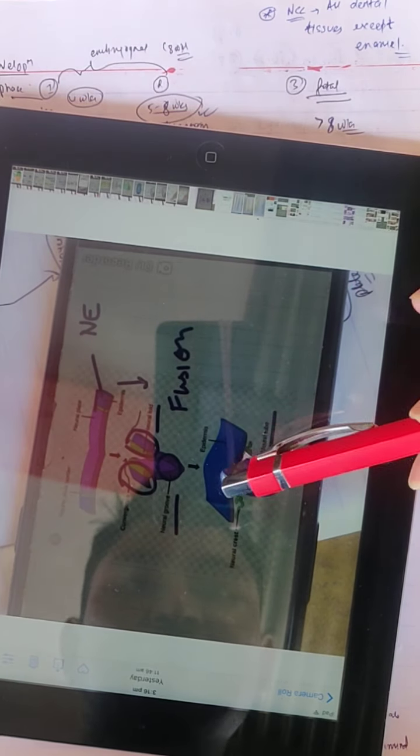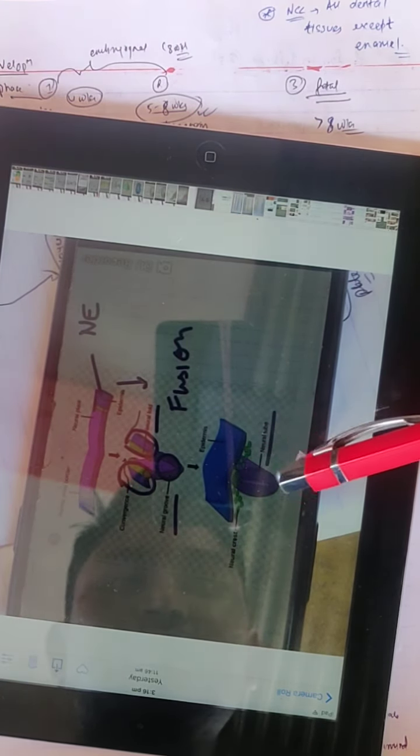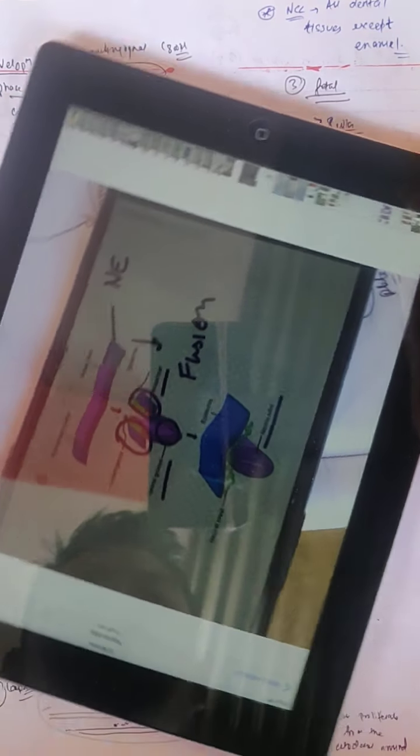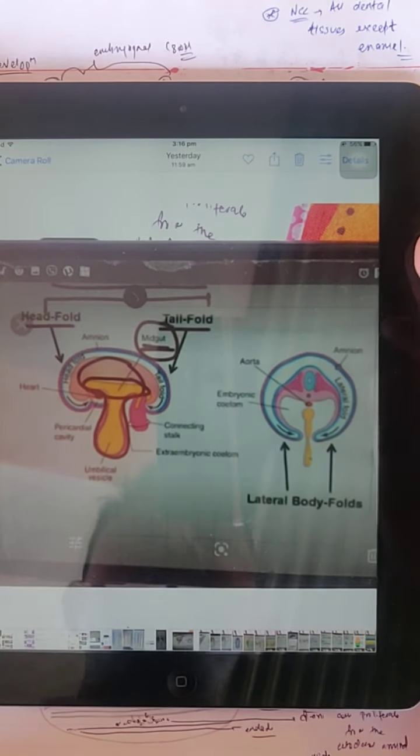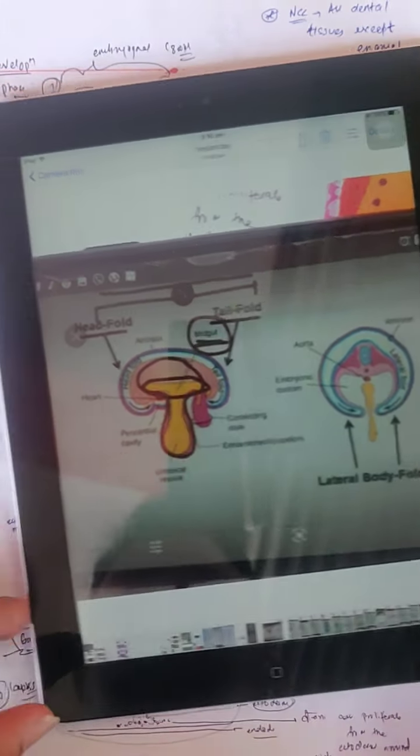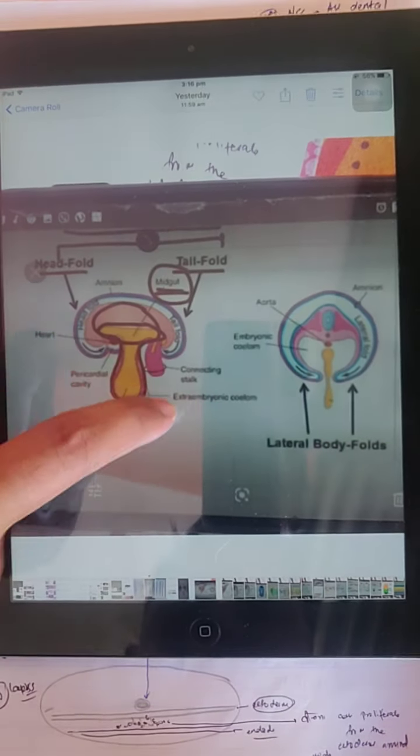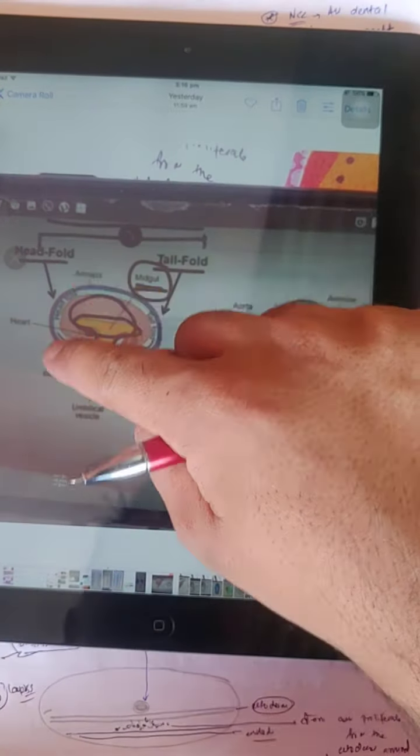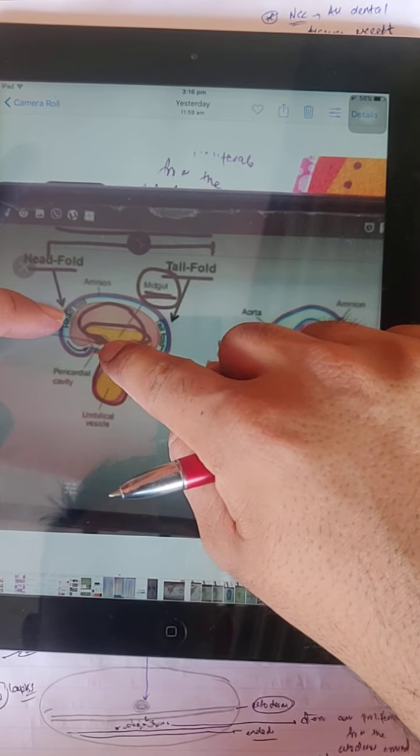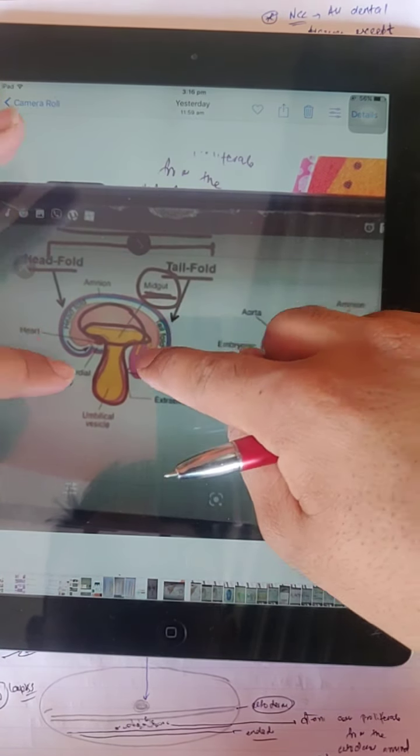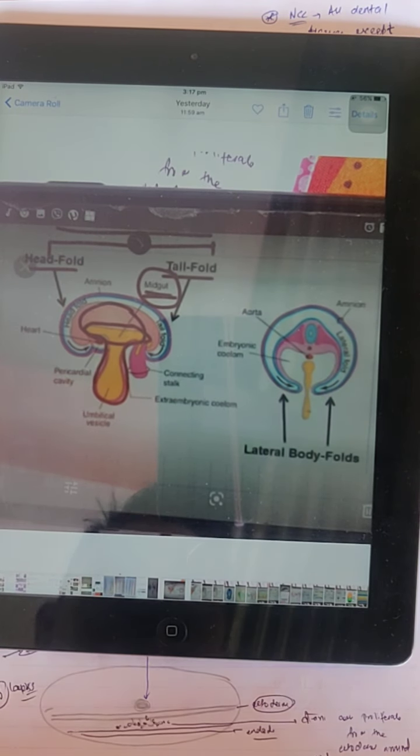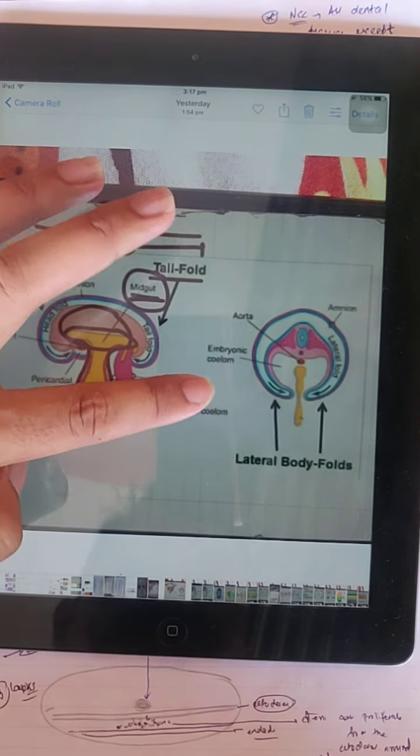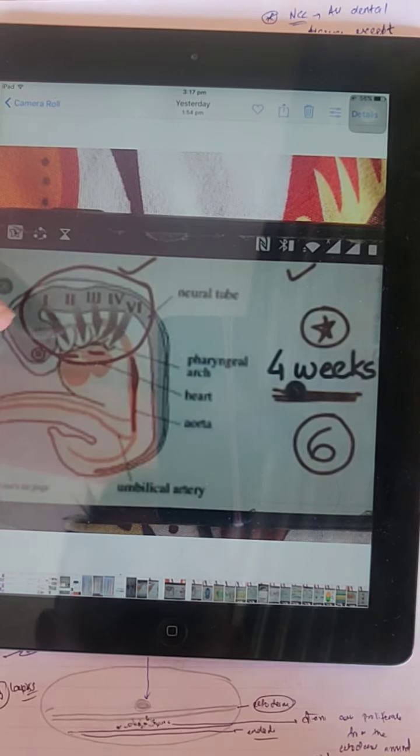There are two types of folding. This is the lateral wall. This is the lateral body folding. Now the next one is folding, folding of the body.